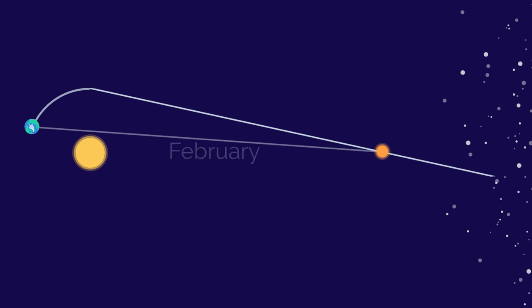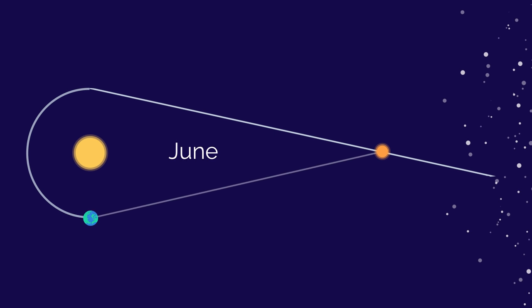If we observe a star when the Earth is at one spot in its orbit, and then wait six months for the Earth to move around the Sun to the opposite point along its orbit, and observe the star again, we can measure the parallax angle.